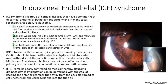ICE syndrome is a group of corneal diseases that have in common corneal endothelial pathology, iris atrophy, and in many cases secondary angle closure glaucoma. The cause is not fully understood, but has been linked inconclusively to underlying viral infection with herpes simplex virus or Epstein-Barr virus. ICE syndrome is unilateral, which is a key distinguishing feature in the differential diagnosis, and sporadic with increased prevalence in women between the ages of 20 and 50.